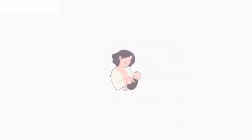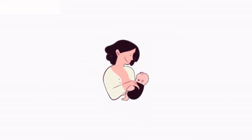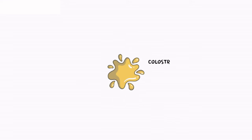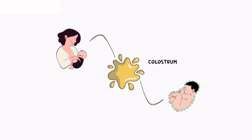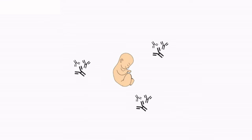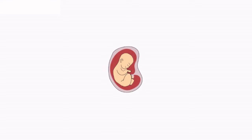Do you know why mother's milk is considered essential for newborn infants? The yellowish fluid, colostrum, secreted by the mother during the initial days of lactation, has abundant antibodies to protect the infant. The fetus also receives some antibodies from their mother through the placenta during pregnancy. These are some examples of passive immunity.